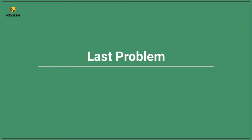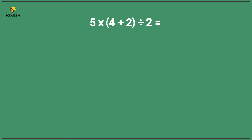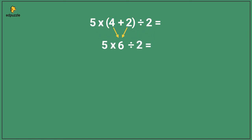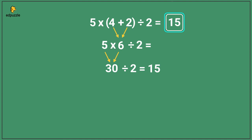Here's another one for you to solve. In this problem, 4 plus 2 is inside of the parentheses, so it must be solved first. Don't forget to bring down the remaining items: 5, the multiplication symbol, the division symbol, and 2. Next, solve 5 times 6, which is 30, and bring down the division symbol and 2. Finally, 30 divided by 2 equals 15. The value of this expression is 15.